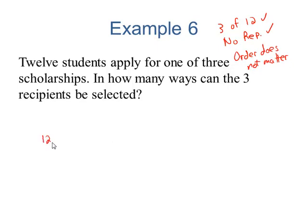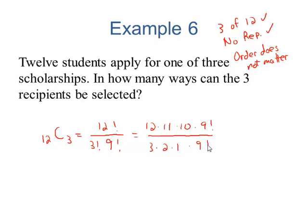So, we have 12 C 3, that's going to be 12 factorial over 3 factorial times 9 factorial. Break down the 12 to be 12 times 11 times 10 times 9 factorial. Break down the 3 factorial to be 3 times 2 times 1. Leave the 9 factorial alone, the larger one.